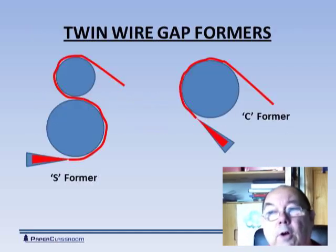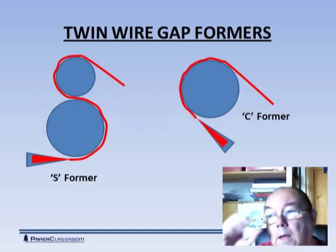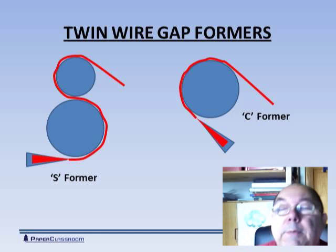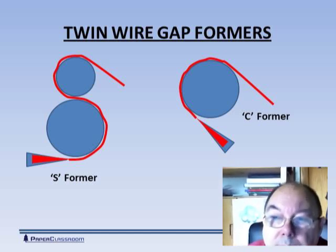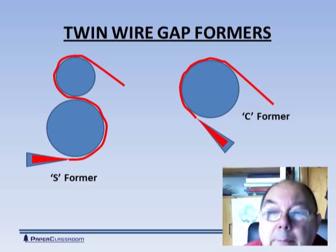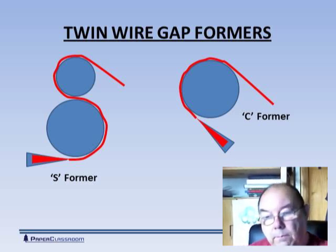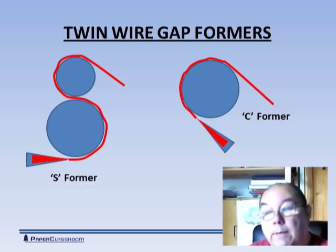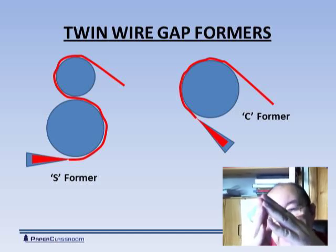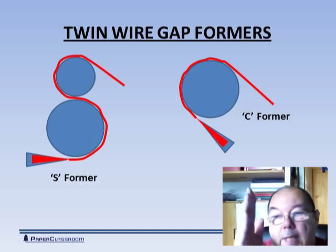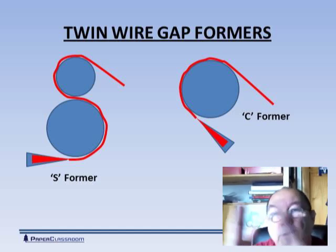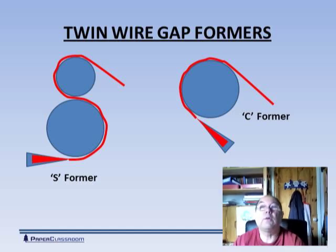Okay, well let's move on to the different formers now. Typical tissue formers are often known as gap formers. It's called a gap former because with twin wire, we have two wires that come together and the stock actually gets squirted in between the gap in between those two wires as they come together.